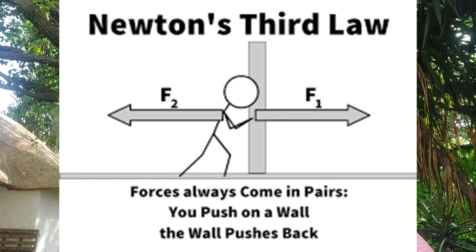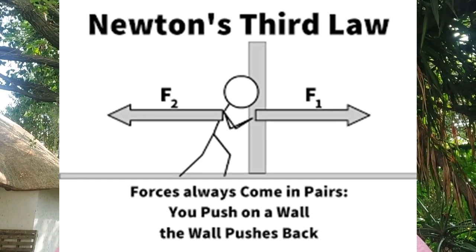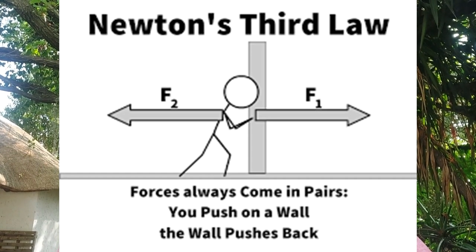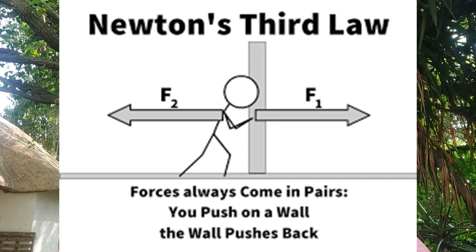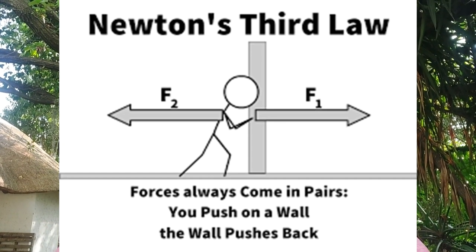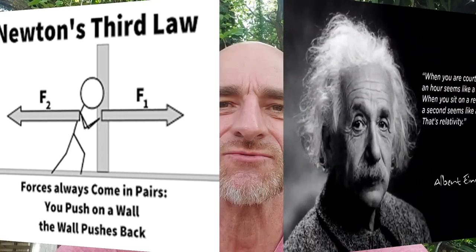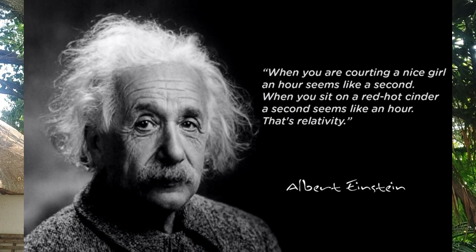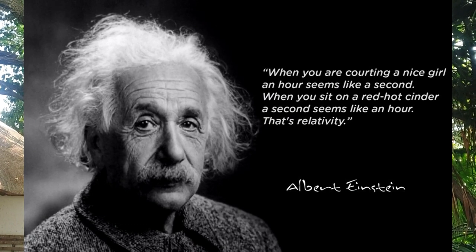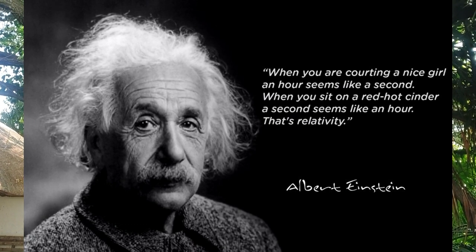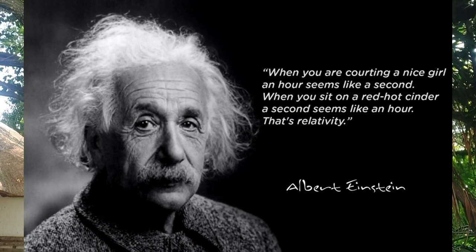It's all about duality. Newton was saying that everything — for one force there is an equal and opposite. And Einstein's relativity is about polar, relative opposites.